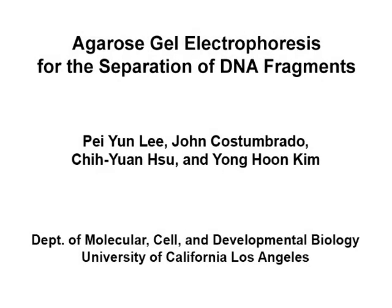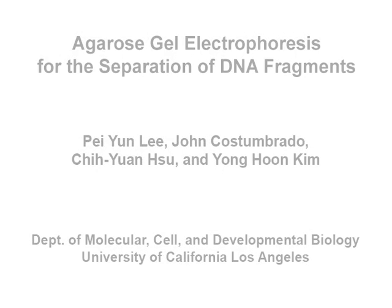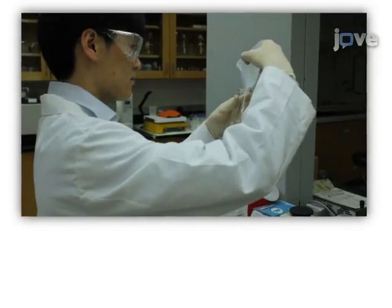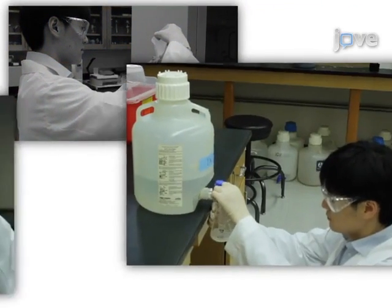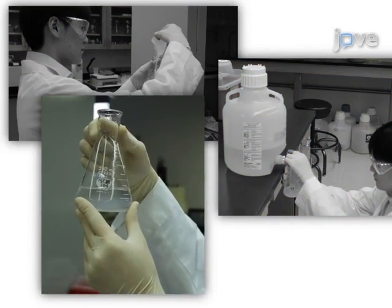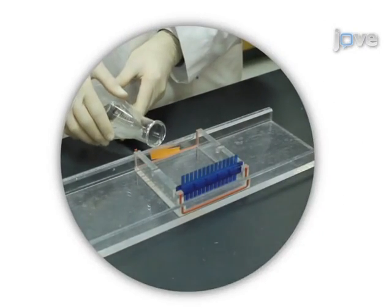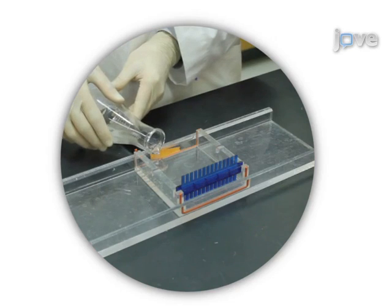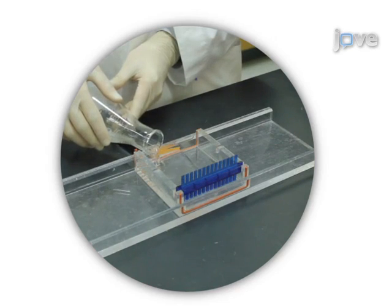The overall goal of this procedure is to separate DNA fragments of varying sizes. This is accomplished by first preparing a gel with the appropriate concentration of agarose and a fluorescent dye. The second step is to pour the gel into an appropriate mold and allow it to set.